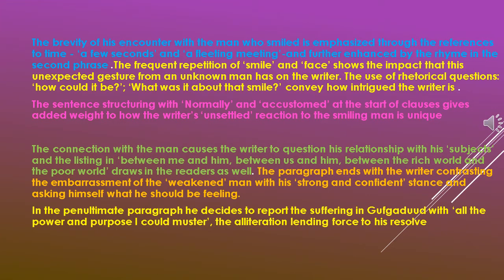The brevity of his encounter with the man who smiled is emphasized through references to time — 'a few seconds' and 'a fleeting meeting,' meaning it was a quick, flashy encounter — further enhanced by the rhyme in the second phrase. The frequent repetition of the word 'smile' shows the impact that this unexpected gesture from an unknown man has on the writer. The use of rhetorical questions — 'How could it be?' and 'What was it about that smile?' — conveys how intrigued the writer is. The sentence structuring with 'normally' and 'accustomed' at the start of clauses gives added weight to how the writer's unsettled reaction to the smiling man is unique.